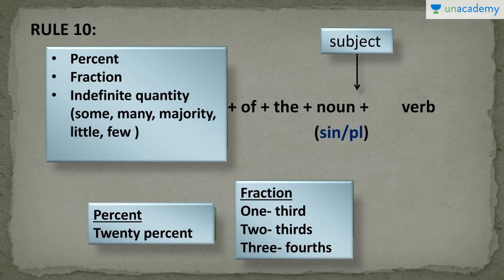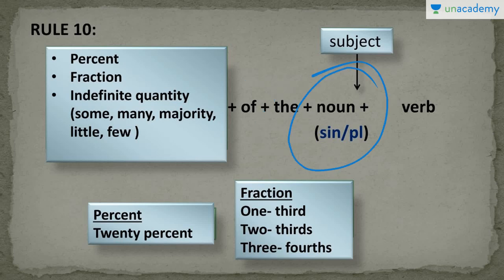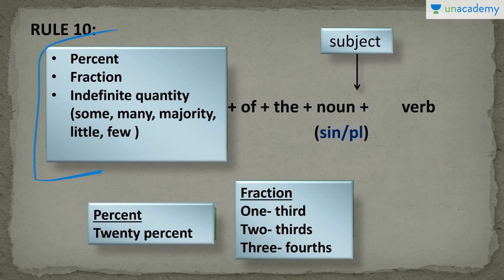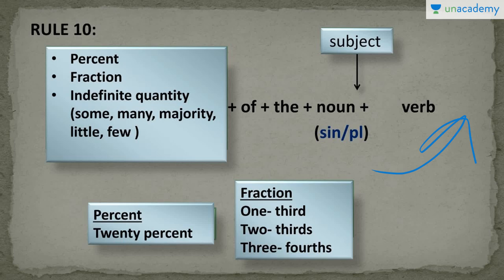This rule says that if any sentence starts with percent, fraction or indefinite quantity, and it is followed by 'of' and then 'the' or any possessive case, then the noun used after it would be the main subject. If this noun is singular, then the verb has to be singular. If this noun is plural, then the verb has to be plural. So the noun after 'of' is going to determine whether the verb and other parts of speech will be singular or plural.